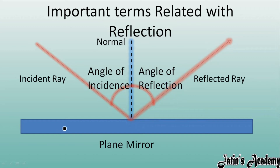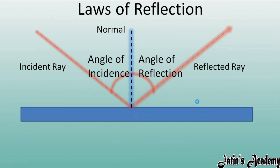To recap: whatever ray comes from outside and strikes on a plane mirror is the incident ray. After striking, it reflects back as the reflected ray. The perpendicular drawn on the mirror is the normal. The angle between the incident ray and normal is the angle of incidence, and the angle between the reflected ray and normal is the angle of reflection. Next, we have the laws of reflection.